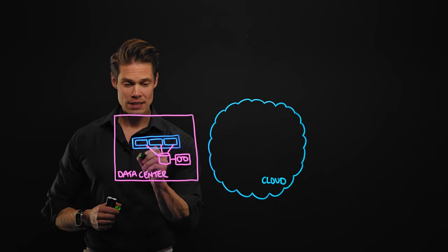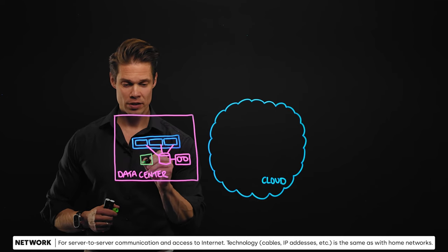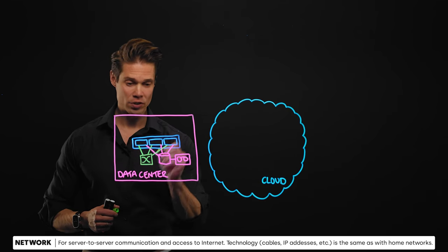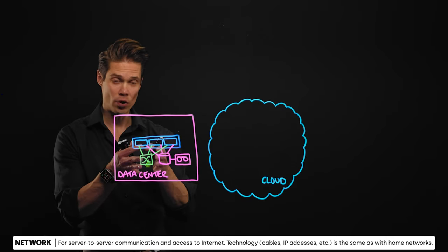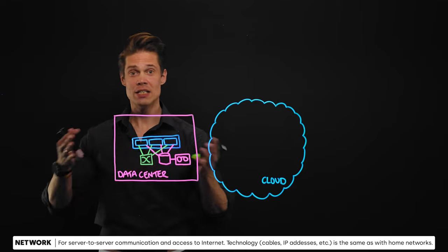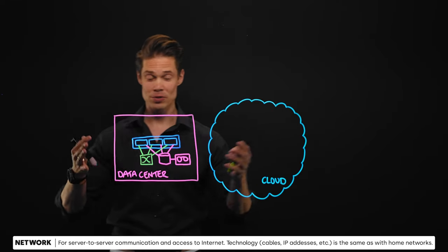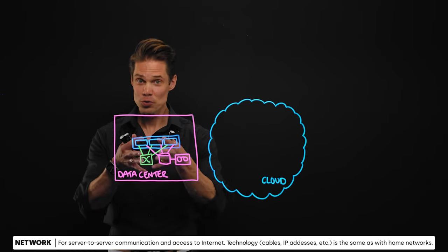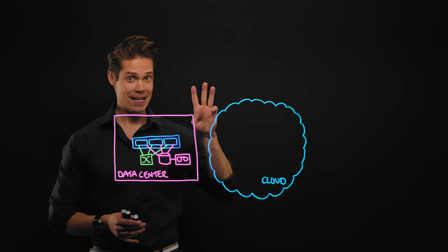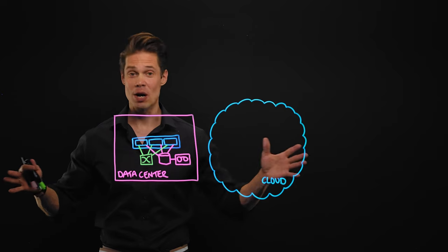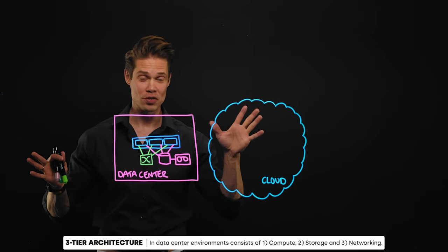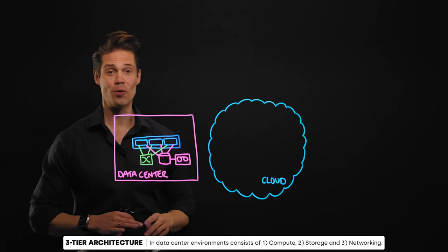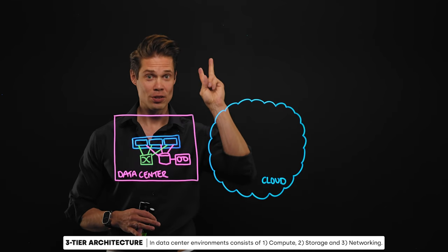We also need some kind of network set up for the whole environment. We connect all of these servers to the same network so they can communicate, and through this network these computers get access to the internet and to other data centers. That's how we can access all those services — emails, drives, and more. These are the three main components of IT infrastructure in every data center: compute, storage, and networking — what we call the three-tier architecture.